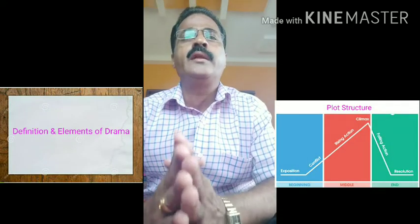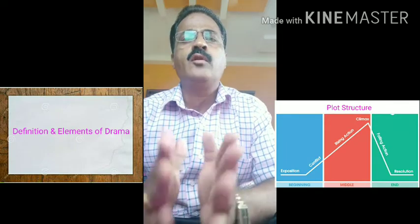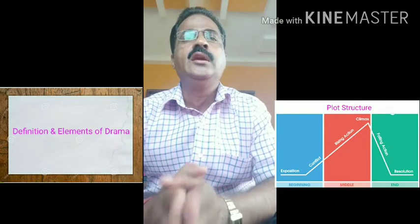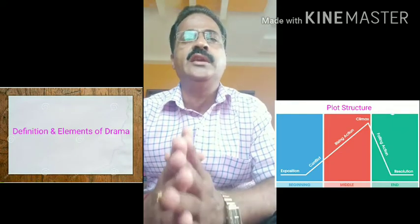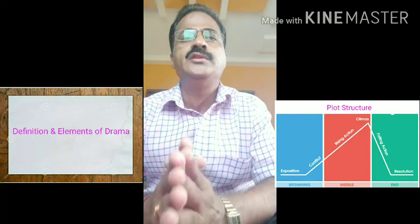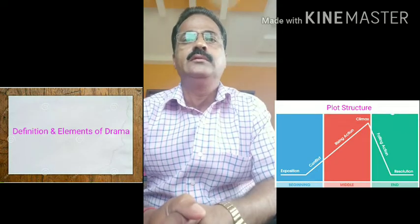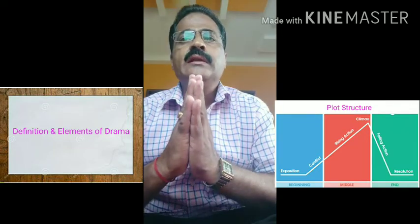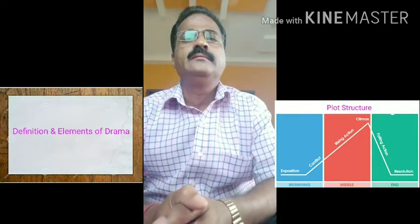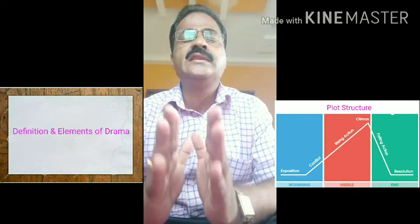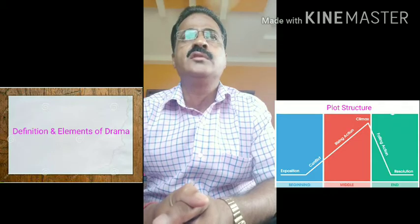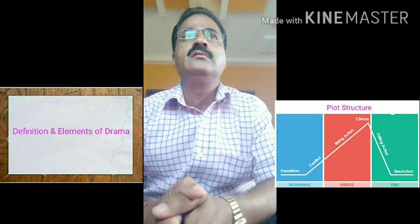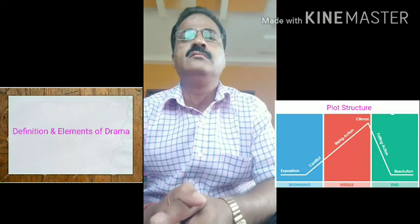The first element of drama is plot. Plot means the arrangement of events in a story, including the sequence in which they are told and the causal connections between events. Plot is the series of events that take place in a play. There are six stages in a plot structure: initial incident, preliminary event, rising action, climax, falling action, and conclusion.